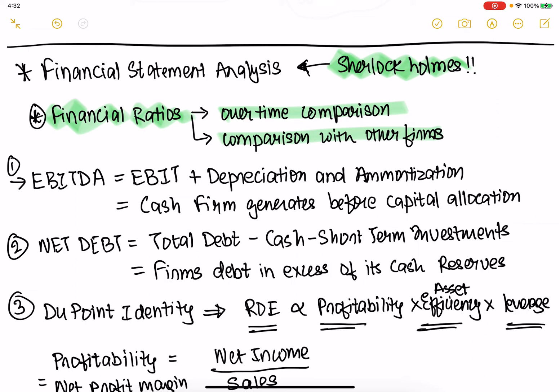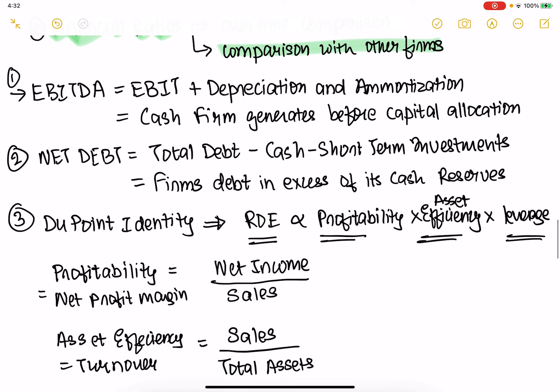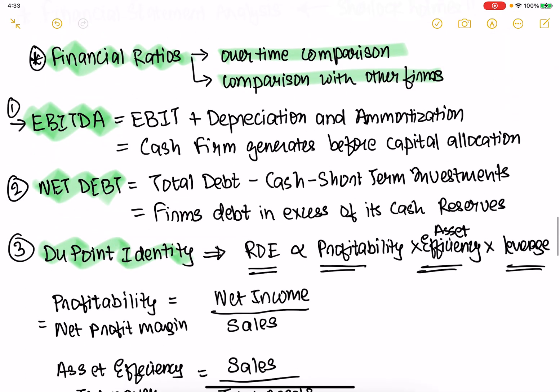For example, if you are a shareholder of Google and want to find out whether Google is doing better or Facebook is doing better, you can use these ratios. There are four ratios that are very important for operations: EBITDA, net debt, and the DuPont identity.